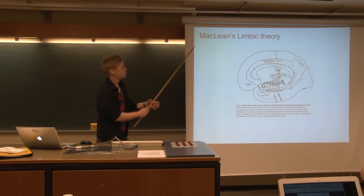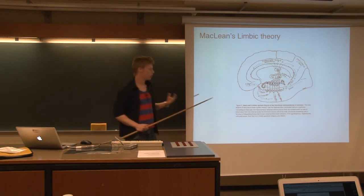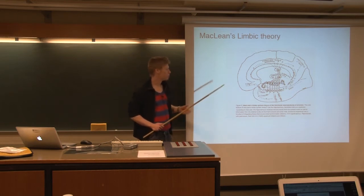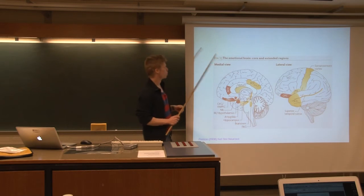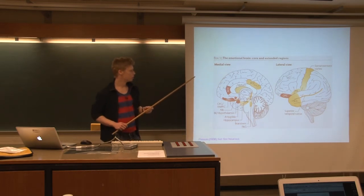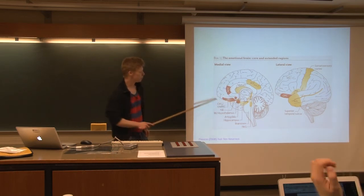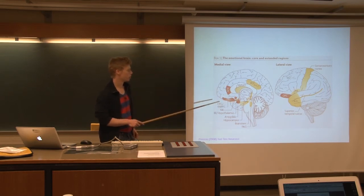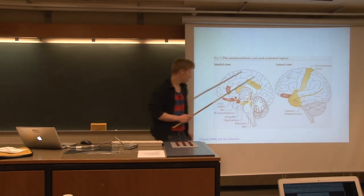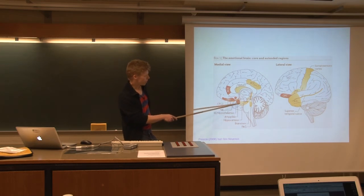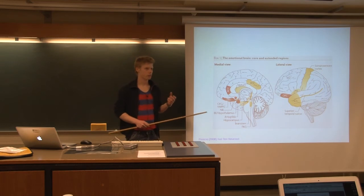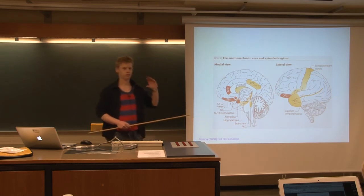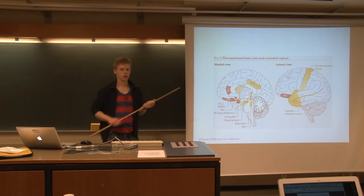McLean formalized what he called the limbic theory, building on the Papez circuit. This has led to what we today believe are the core and extended regions of emotional processing in the brain. In red here, we have brain parts highly involved in emotional processing, while yellow ones are somewhat related. Key regions include the amygdala. This is interesting because in the Klüver and Bucy studies, removing the temporal lobe may have also disrupted the amygdala, which could explain some of the deficits they observed.